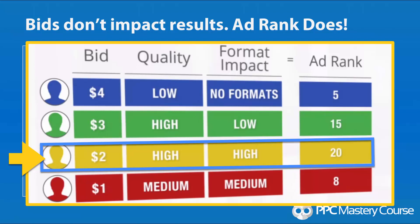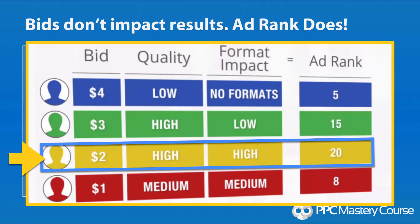Here's a quick refresher on how ad rank works: bids don't impact your results directly — ad rank does. You take your bid, multiply it by your quality score, then factor in format impact (which extensions you're using, like sitelink extensions), and that gives you your ad rank. So someone willing to pay $2 who has a high-quality keyword and ad combination and uses all the formats like sitelinks will actually show up higher in search results. You can bid lower, have higher quality, and get higher click-through rates and more clicks overall. This is essentially the exact counterpoint to the argument for putting your price in ads.